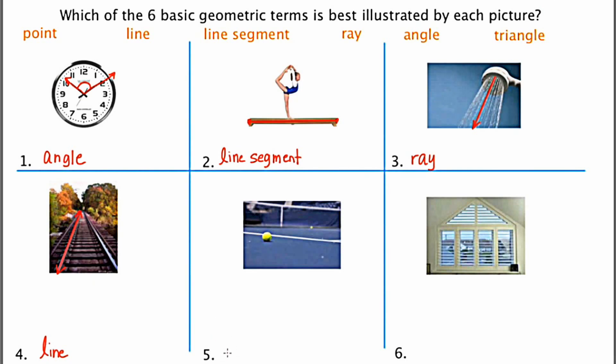Number five would be a point. This tennis ball is a point. It's a location in space. It's a location on this tennis court.